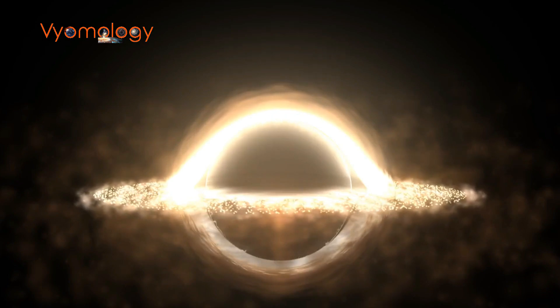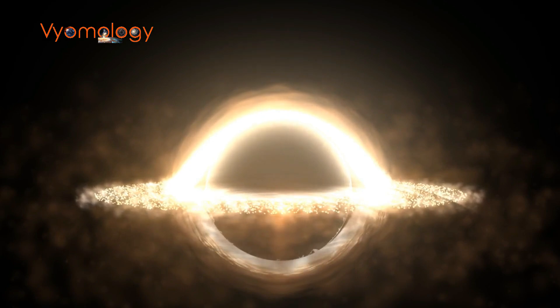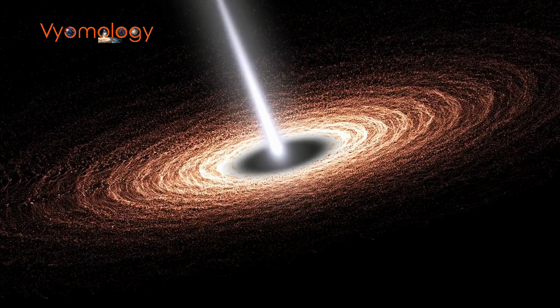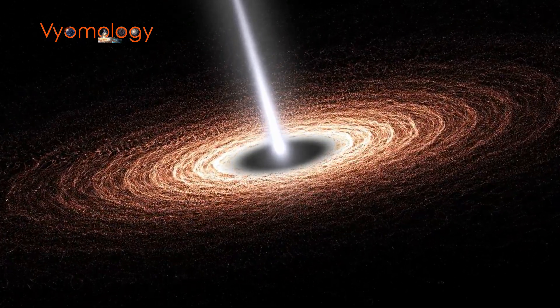By analyzing this distorted light, ExpoSat can map the shape and size of black holes, study the hot gas swirling around them, and uncover the secrets of their jets, those supersonic streams of matter blasting into space.